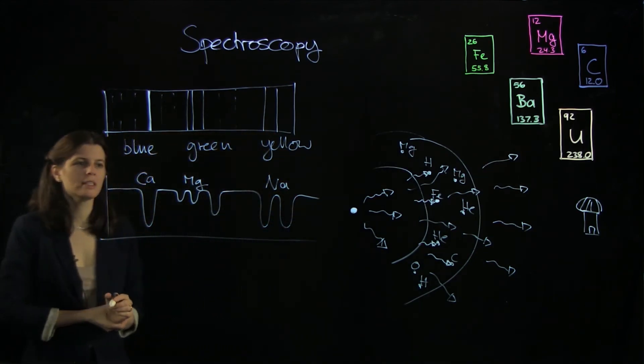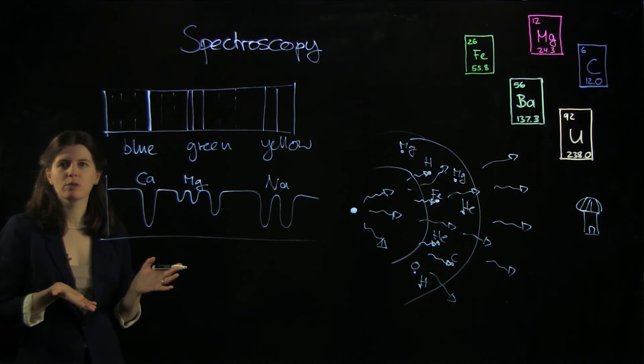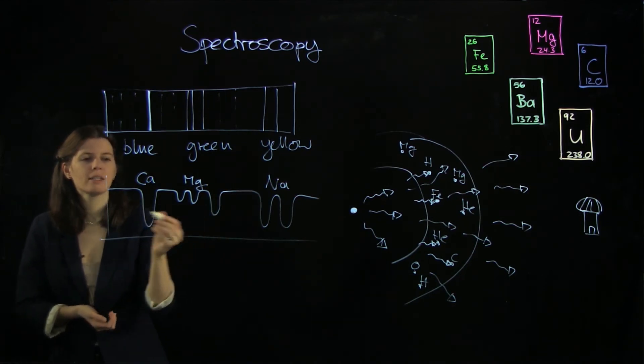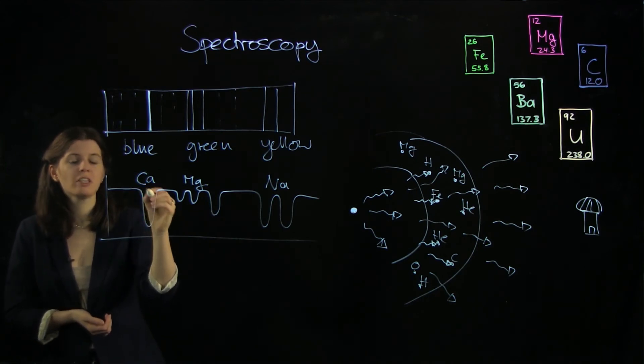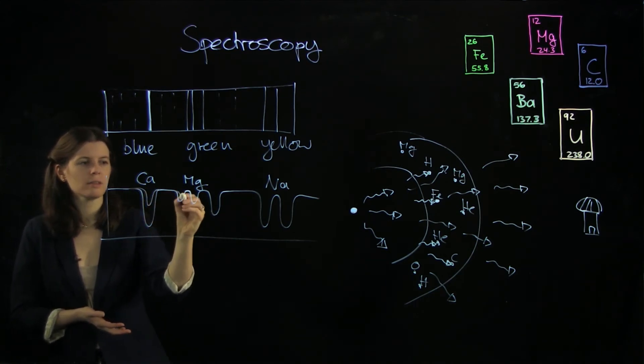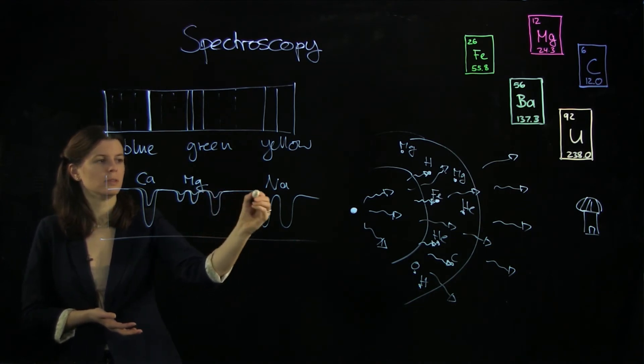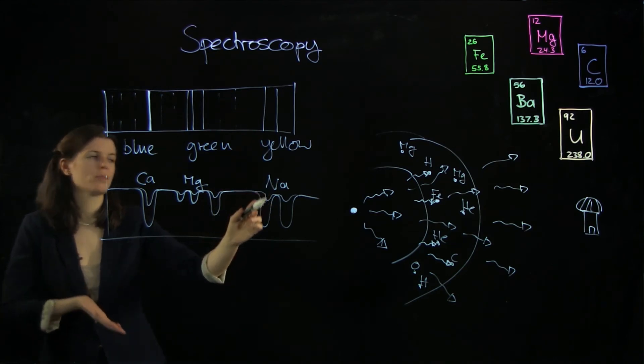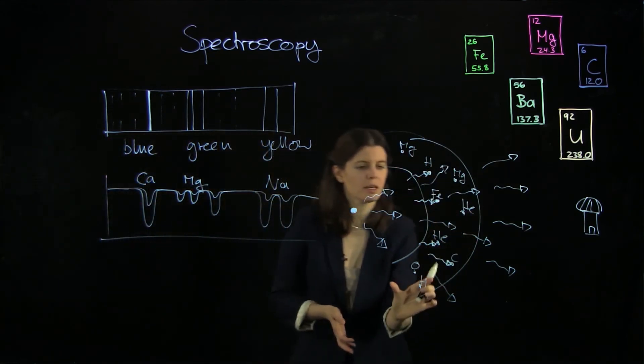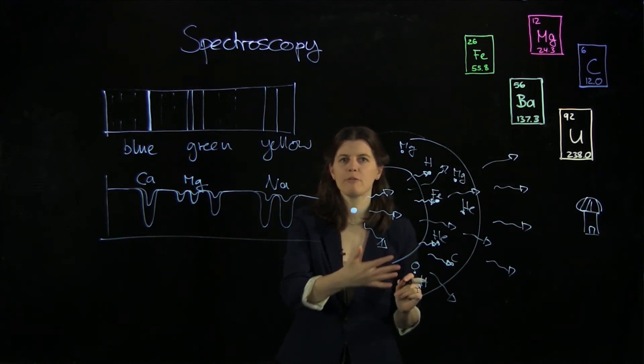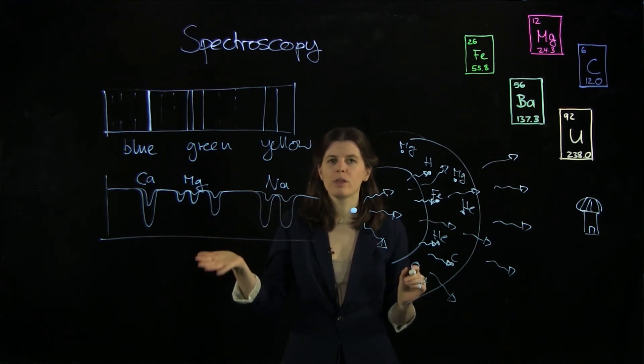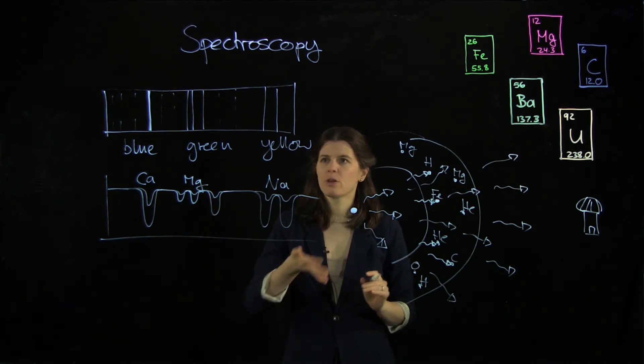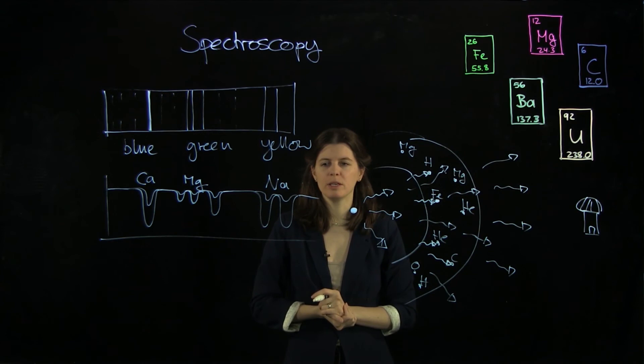And the nice thing of course is that when we want to find the most metal poor stars, so the older stars, then we want to look for stars whose spectra have very weak lines, let's say like this, because that means that only little calcium, magnesium, and sodium were actually in, are present in the star, which means that the star must have formed at a really early time when the cycle of chemical enrichment had only gone round a few times. So this is the secret of spectroscopy, absorption line spectroscopy.